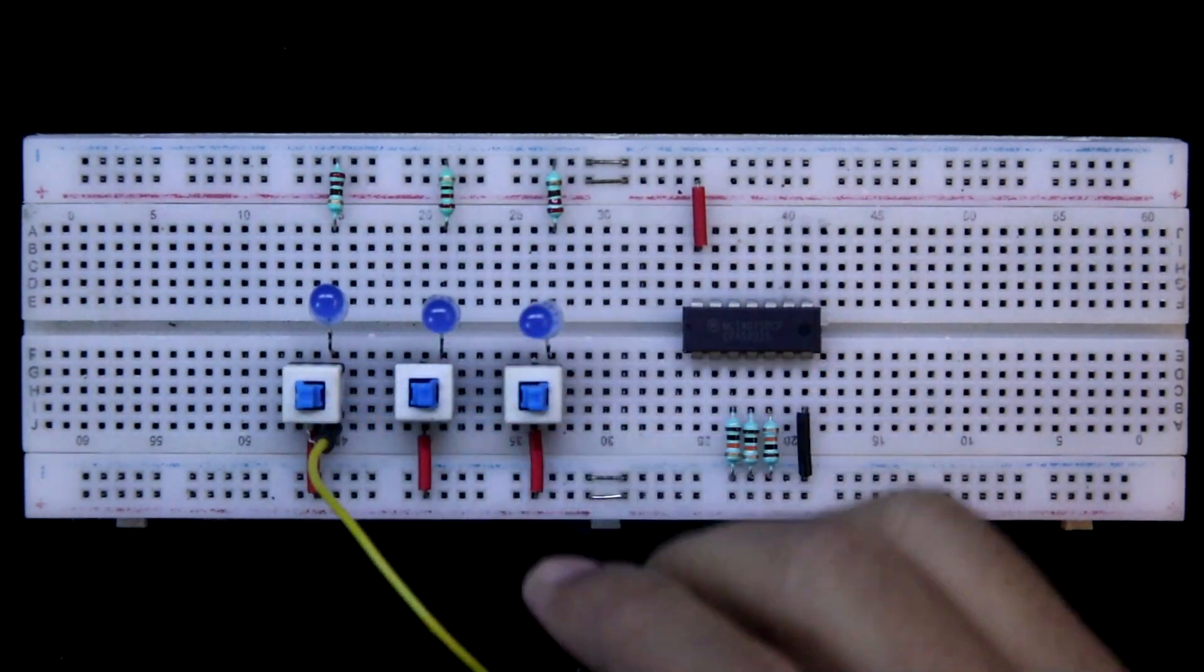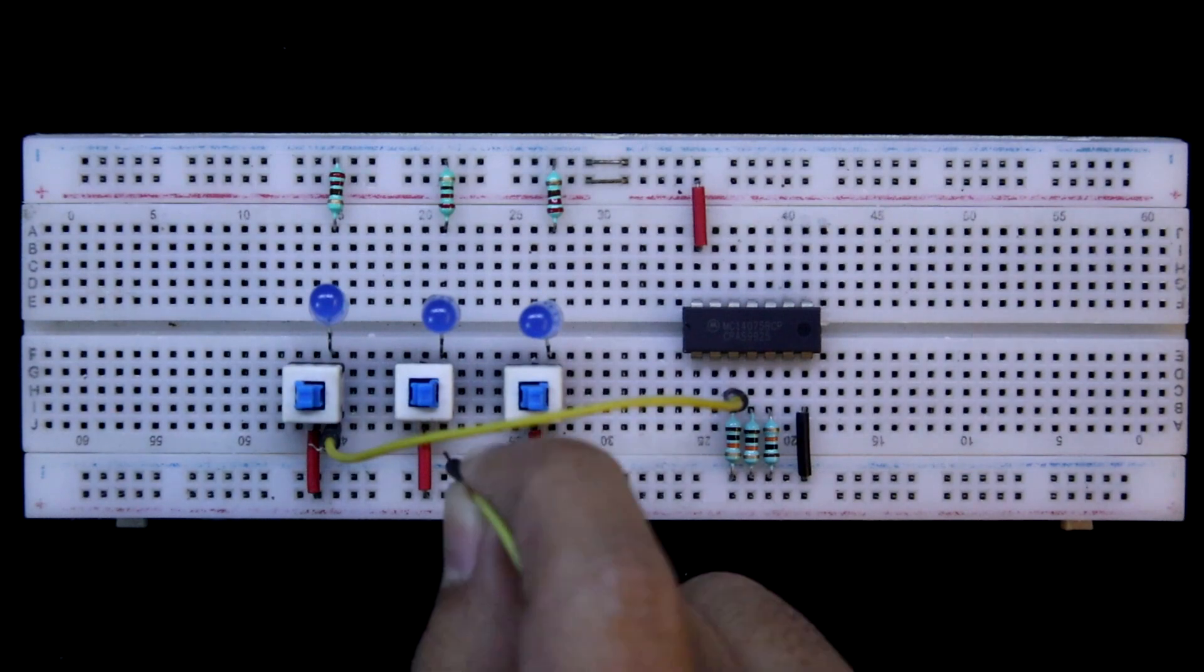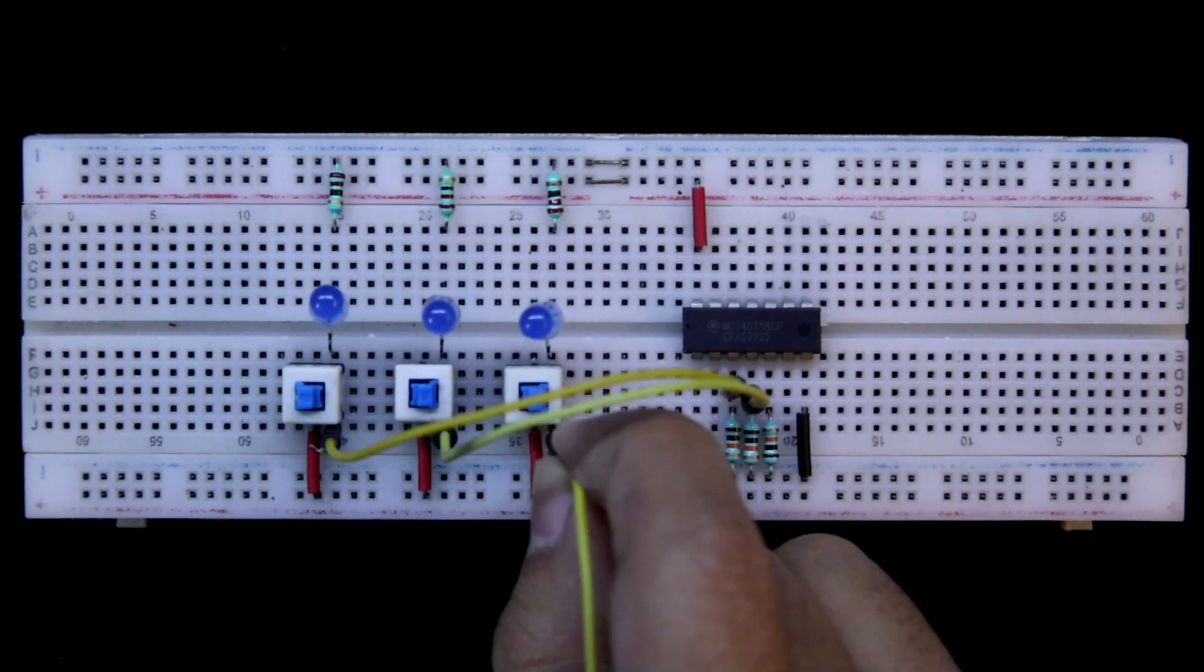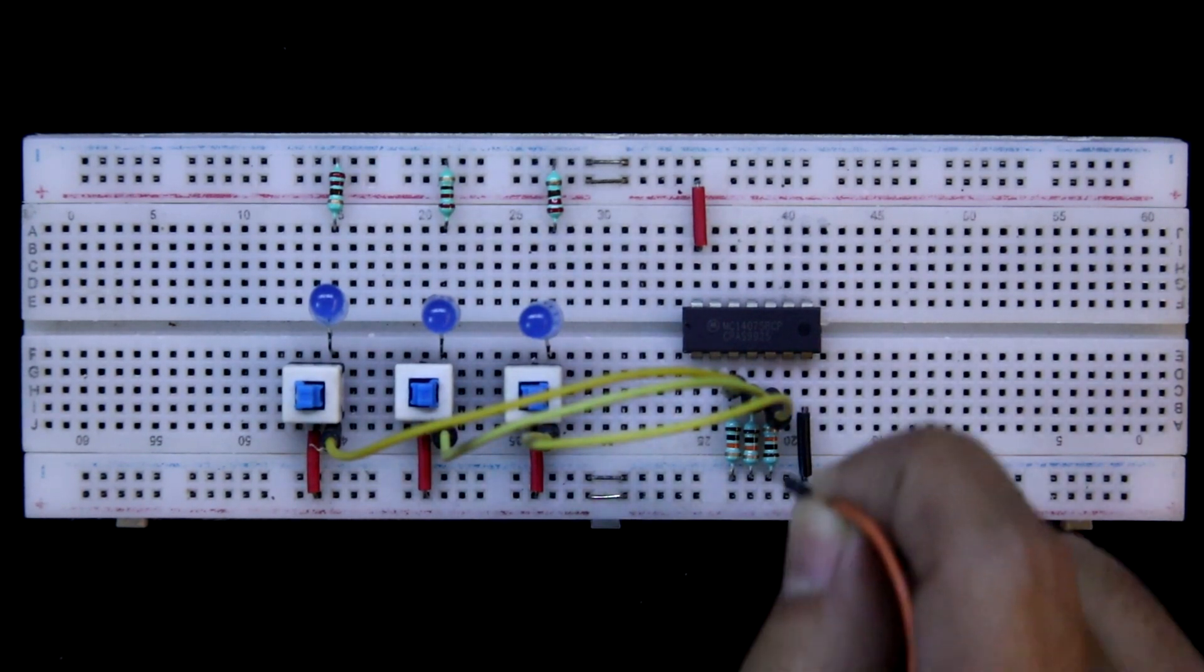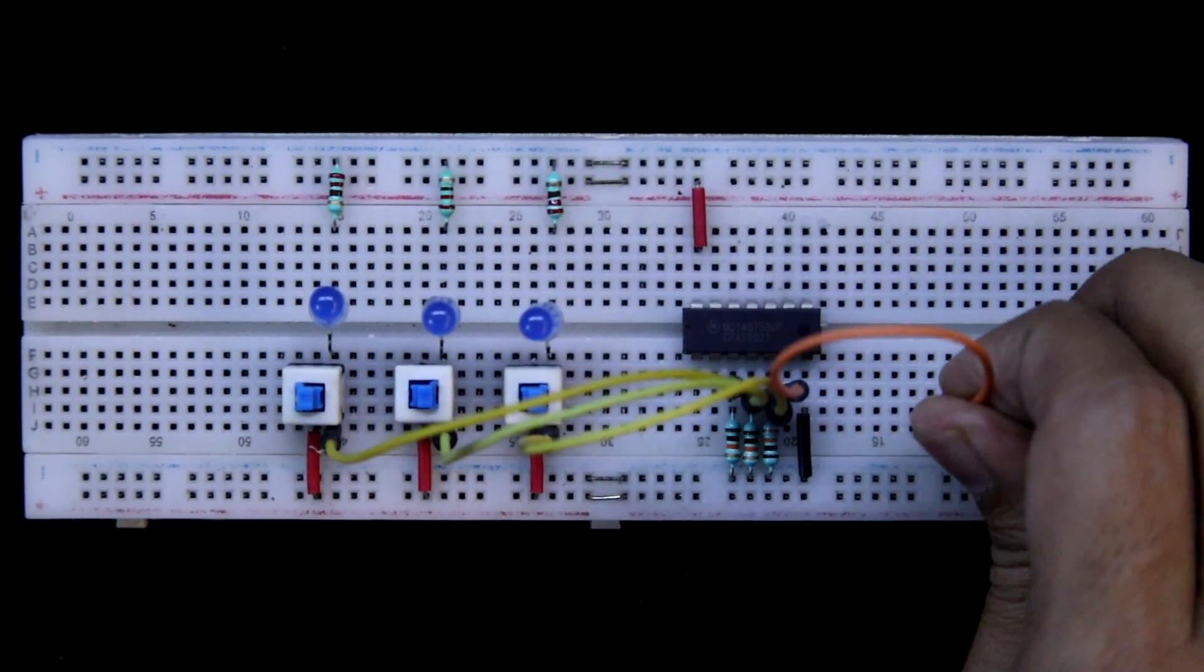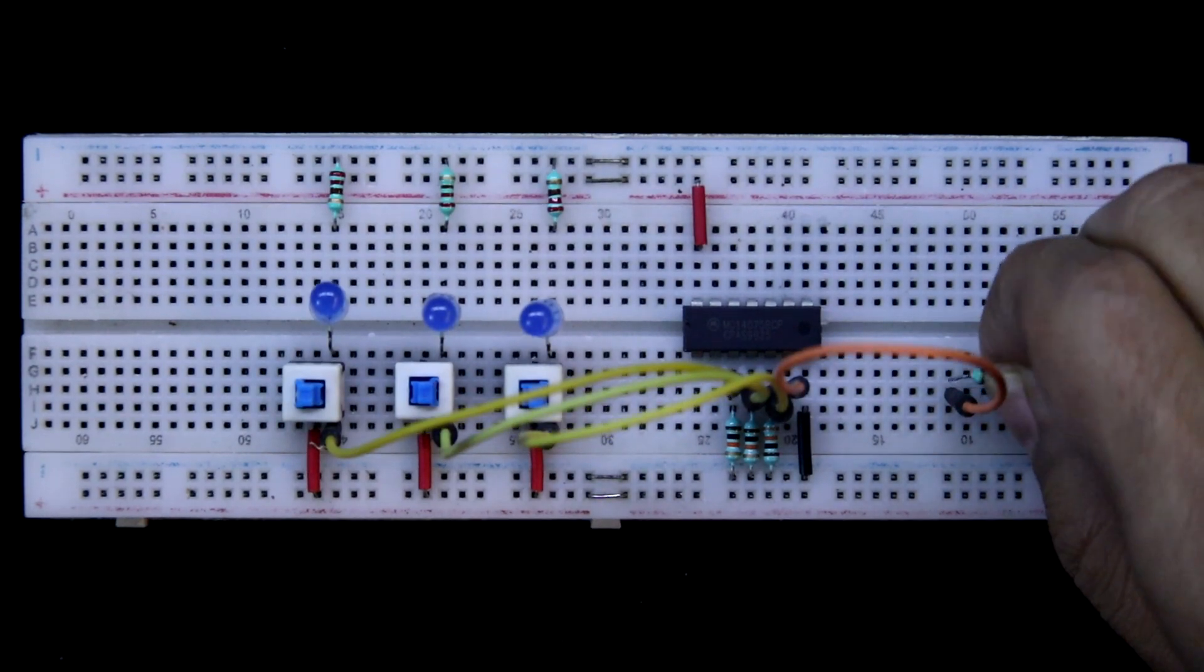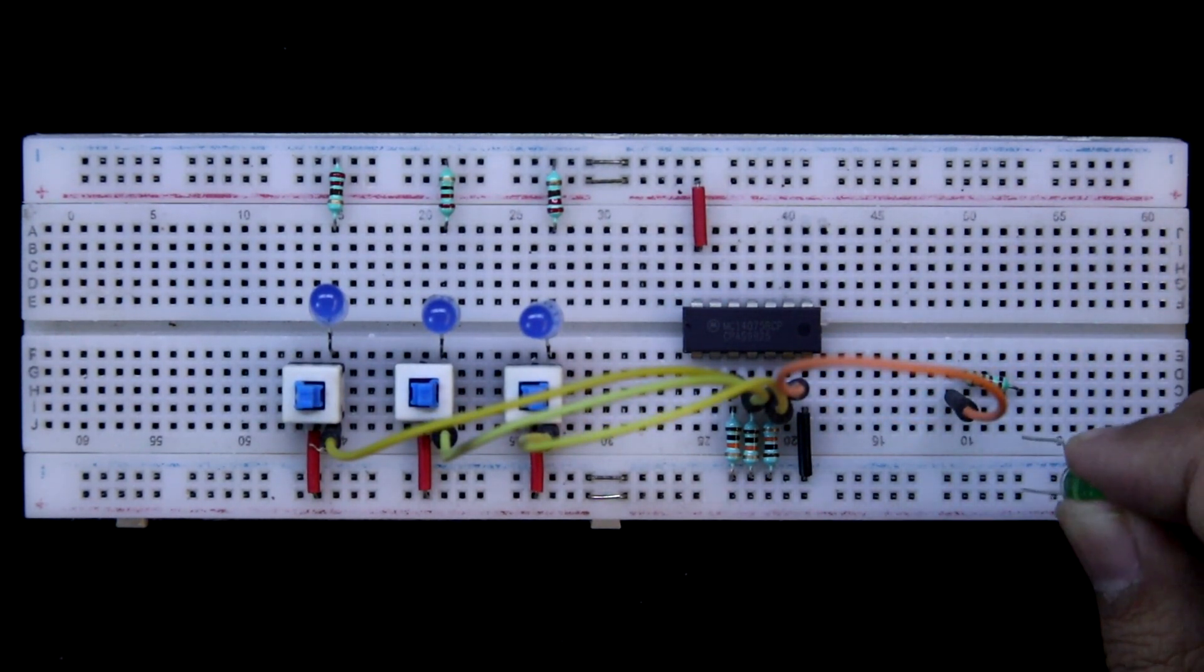Switch A to pin number 3, switch B to pin number 4, switch C to pin number 5. Now connecting the output, which is pin number 6. I will connect a resistor with it, and then the output LED.